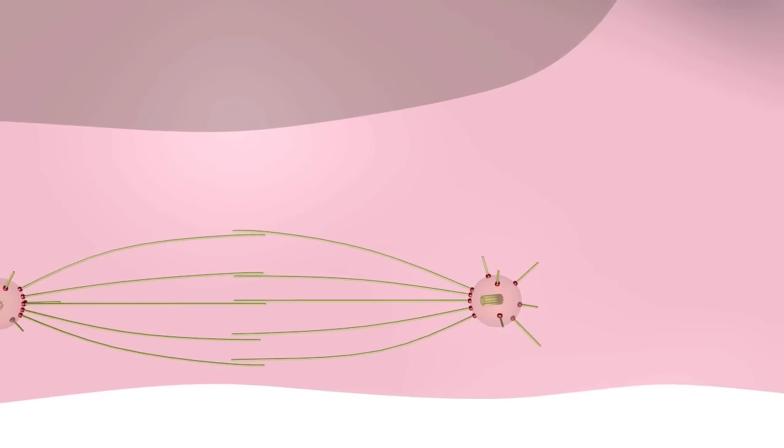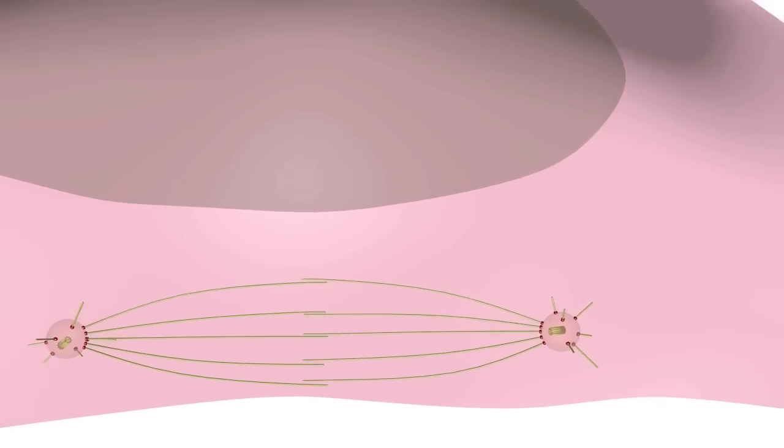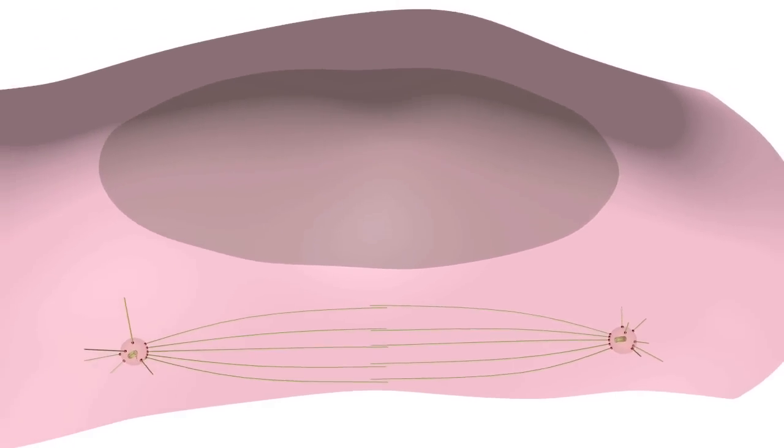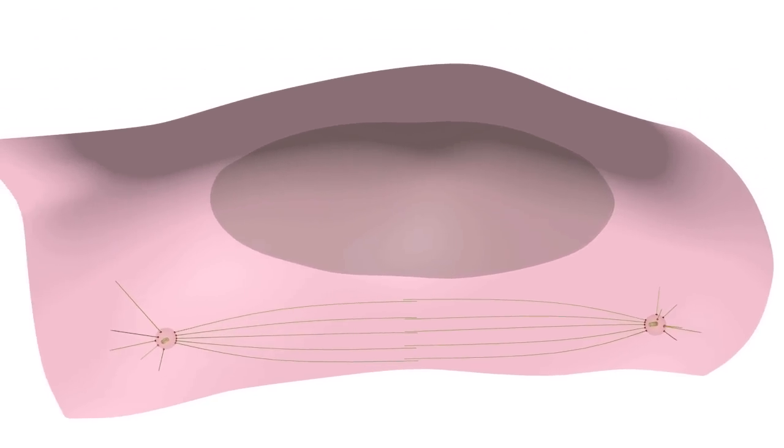Also in prophase, the centrosomes separate away from each other as they continue to nucleate microtubules. Now comes the time when the microtubules have to contact the chromosomes.